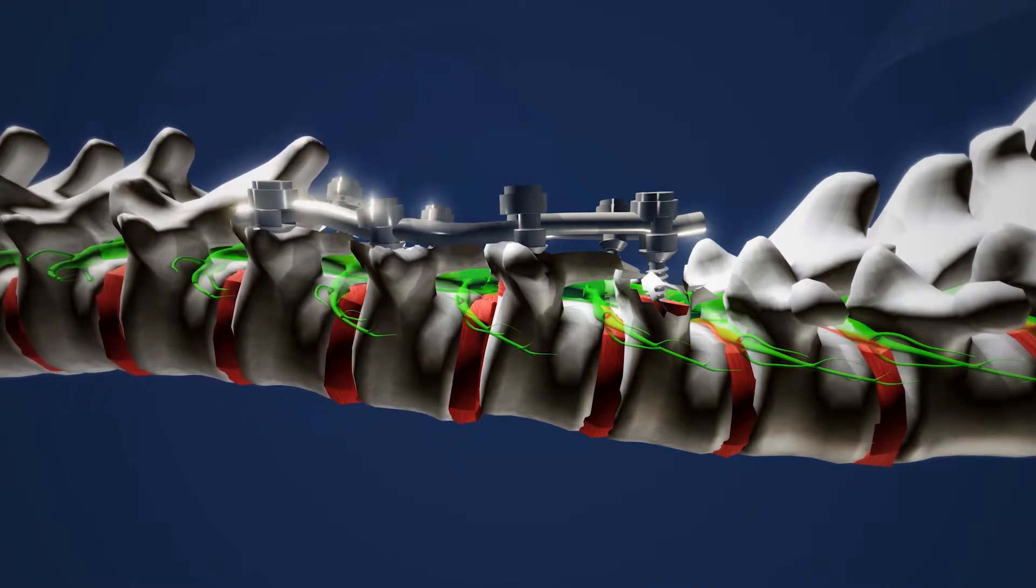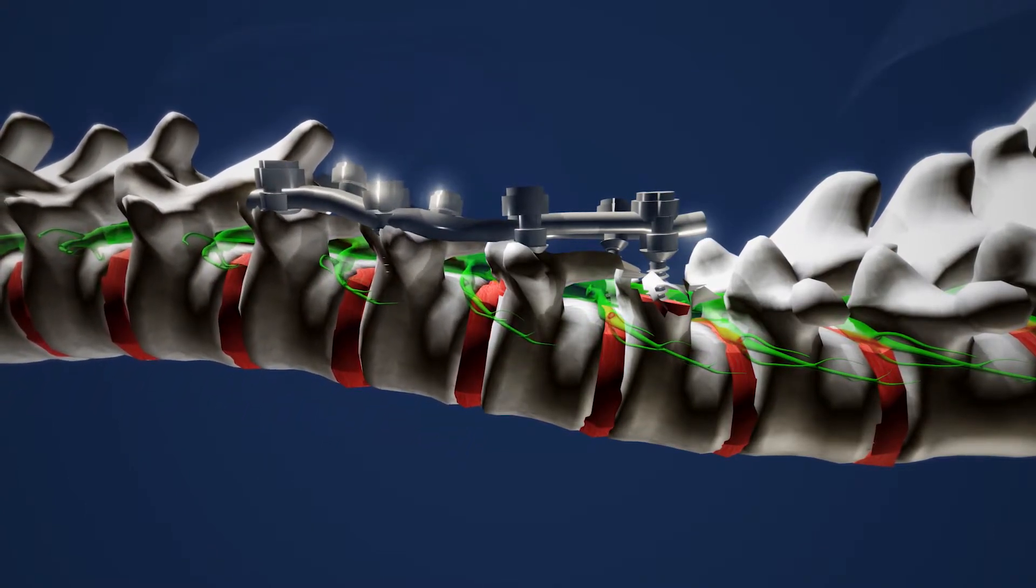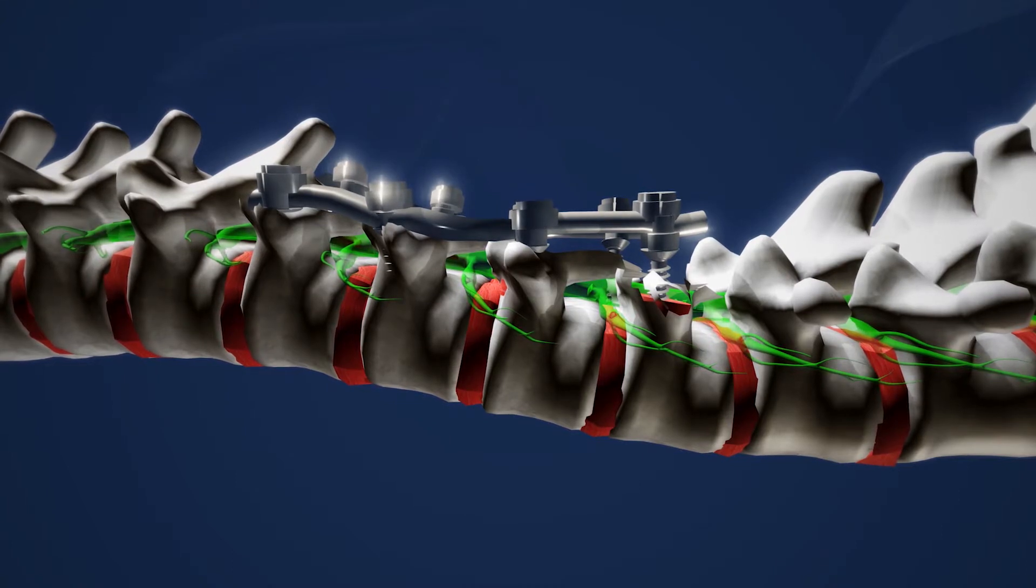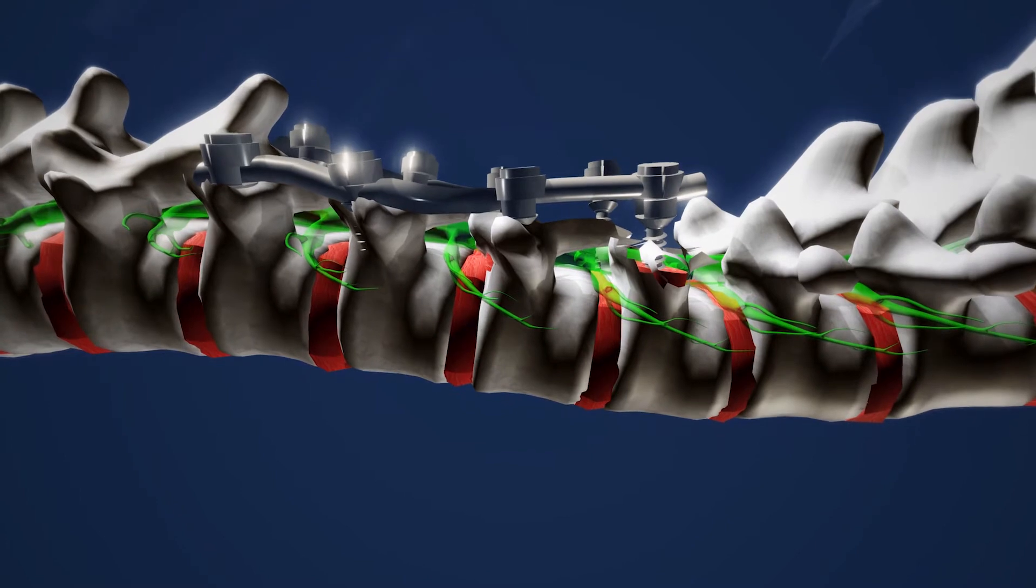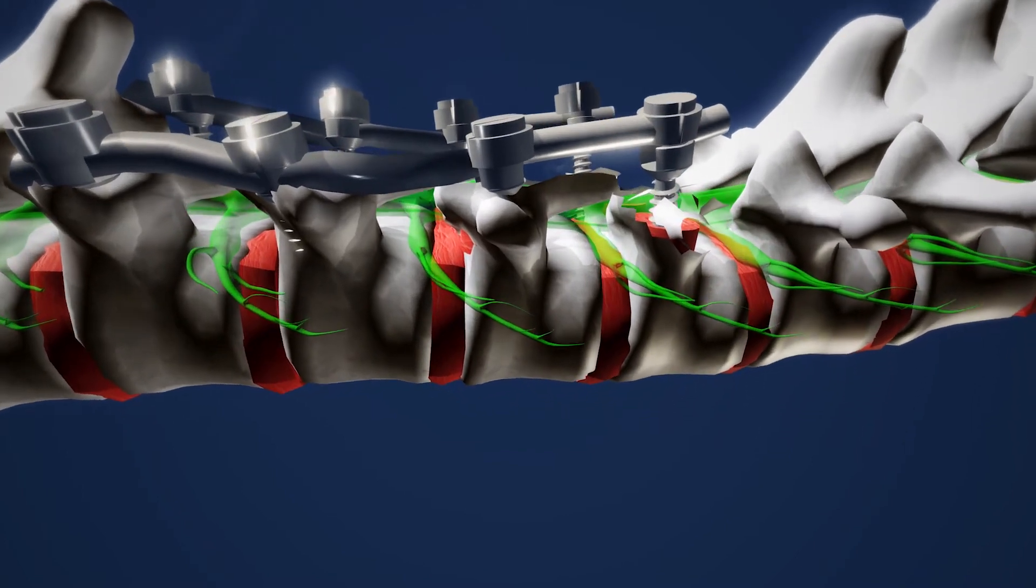Once we bring the spine back into alignment, we can lock in the screw rod construct and this is what will hold him together for his first year after injury while the bone grows together and heals.